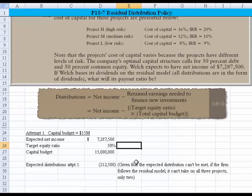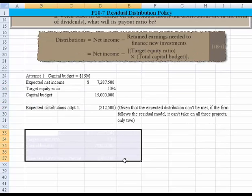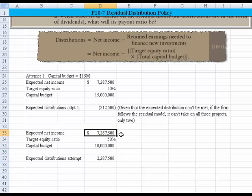So let's attempt that again. I'll scroll the screen now, and now we will do the exact same approach. So now we have the expected net income, the same amount, the same target income, and a capital budget, and now we are capable of paying dividends in this situation. To follow the strict residual distribution policy, we really can't take on three projects. We can only take on two. We need this number to be a positive number.